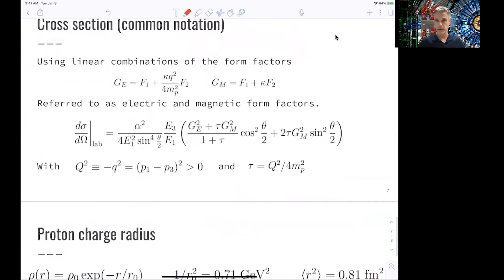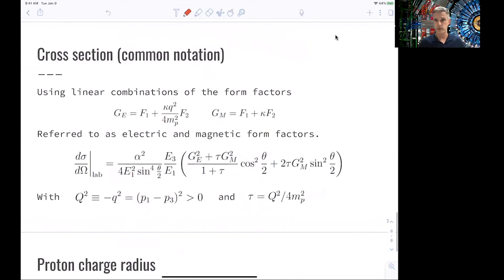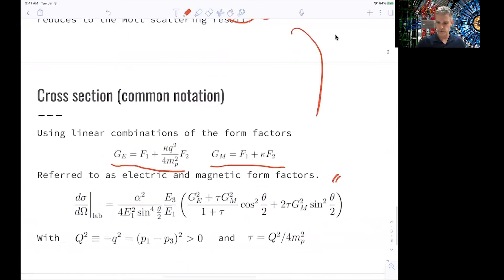Historically, this is not a new idea. This has been done for generations. Historically, the parametrization was done slightly different. So we introduce the linear combination of those form factors, and those are typically referred to as the electric and the magnetic form factors, the GE and GM. This formula here—and this is just algebra going from the previous formula to this—is called the Rosenbluth cross-section formula.